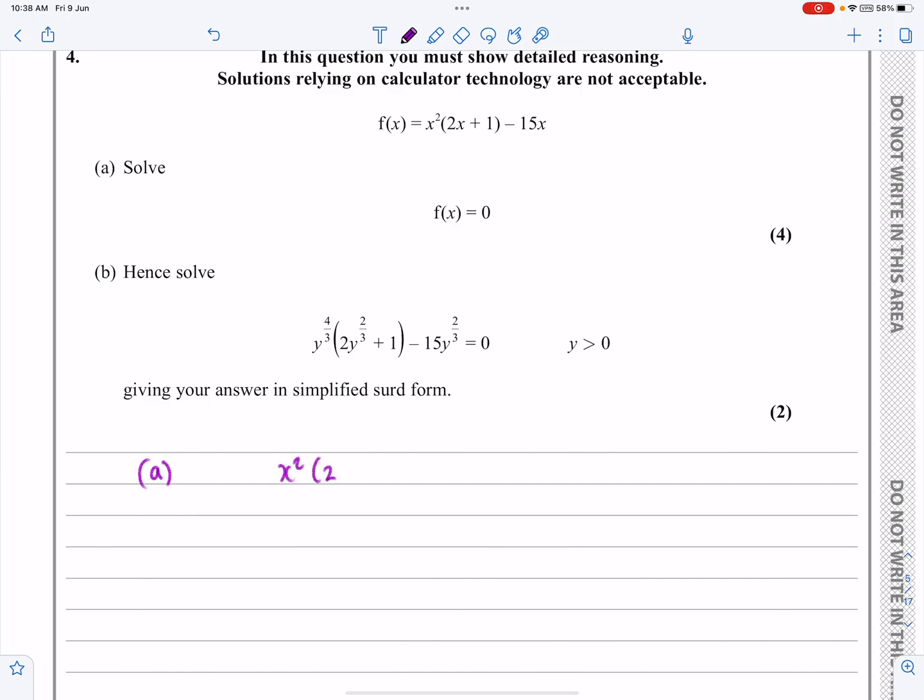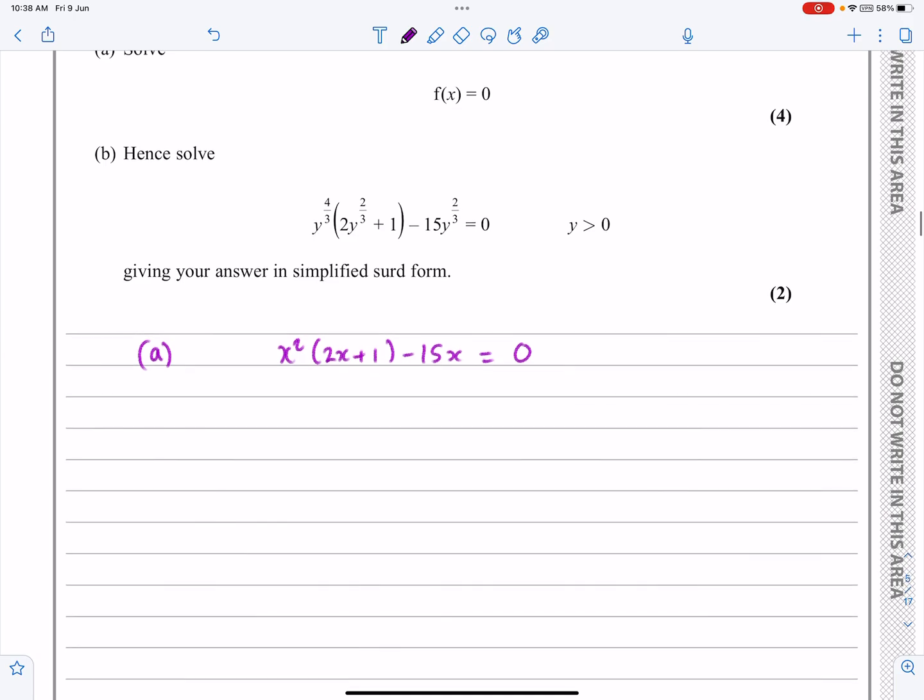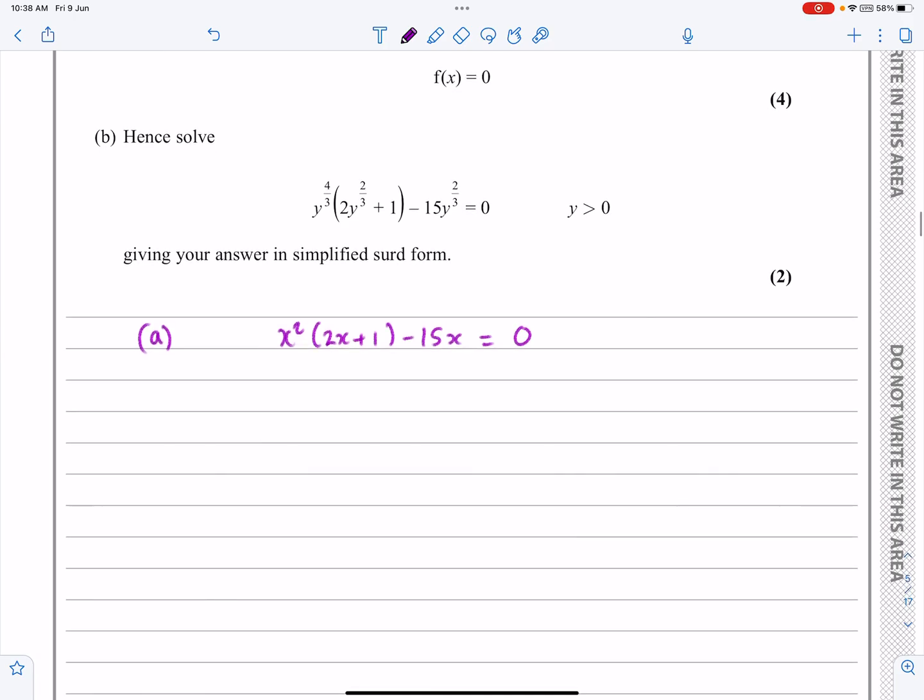So part A says f(x) is equal to x²(2x + 1) - 15x, and for part A we're solving f(x) = 0. That should be relatively straightforward. Let's multiply out the bracket. I'm going to get 2x³ + x² - 15x = 0.